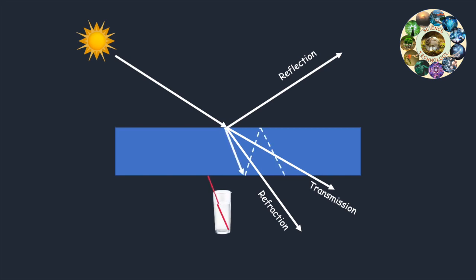Now, the light that propagates through the object — however, the object is absorbing, particularly for some wavelengths of light. This means that a tiny fraction of the wave will get absorbed and converted to heat for every little distance it travels. Overall, the intensity of the light will decay exponentially. This is called absorption.